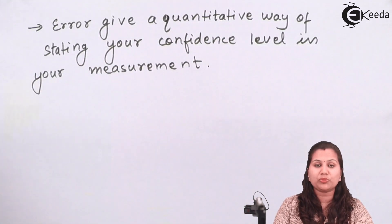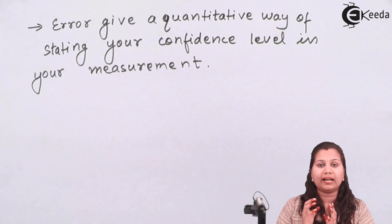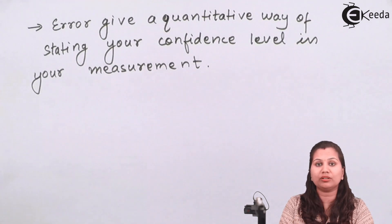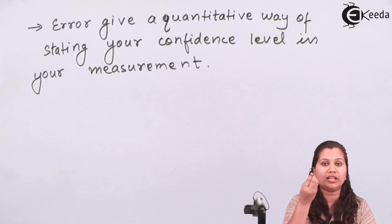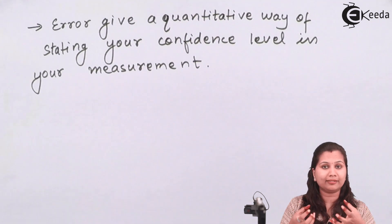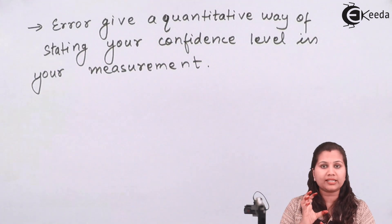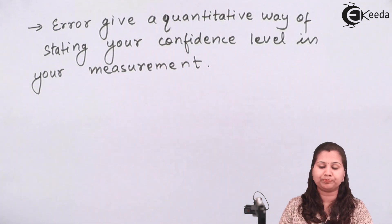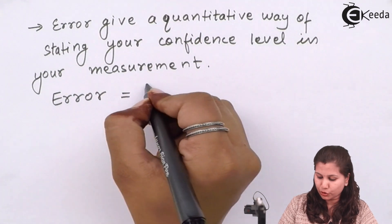When we are doing the measurement of an unknown quantity, we get a value and state the difference between the value obtained after measurement and the actual value of that quantity. Error gives a quantitative way to express this — we are defining that the difference between the actual value of the resistance and the measured value is 2 ohms, giving a quantity to express the confidence level of our measurement.